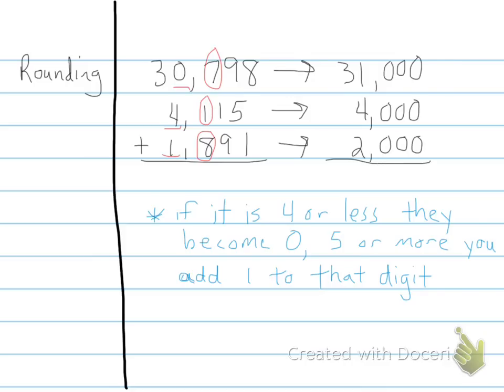So whenever we're estimating by rounding, we would say after we added this up, 0, 0, 0, bring our comma down, 1 plus 4 plus 2 would be 7, and then 3 plus 0. So our answer would be about 37,000.